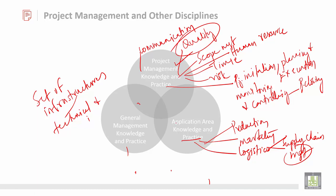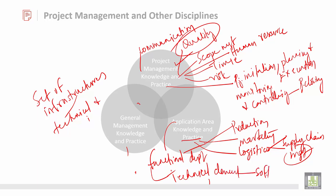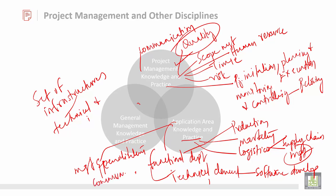There are other application-oriented factors like functional departments and also technical elements. It mainly talks about software development. Then also management specializations, like community development — that is very, very important. Then new product development, then government regulation, which is very, very important. You should follow those government rules.